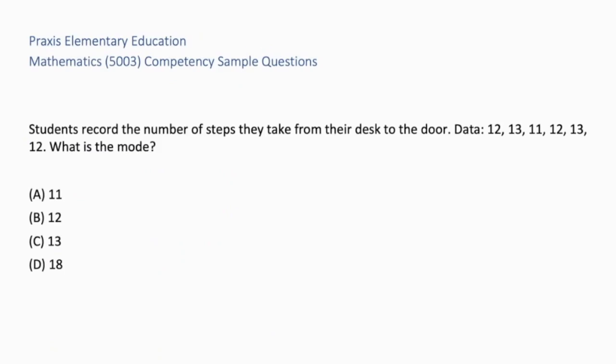Students record the number of steps they take from their desk to the door. Data: 12, 13, 11, 12, 13, 12. What is the mode? Mode is an important math academic word in this question. Mode equals most frequent. So looking at the data, you need to look at the numbers that appear most frequently. Our choices are A, 11. B, 12. C, 13. D, 18. A and C are incorrect, these numbers only appear twice. D is adding numbers instead of finding the mode. The correct answer is B, 12. The most frequent number is 12 as it appears three times.